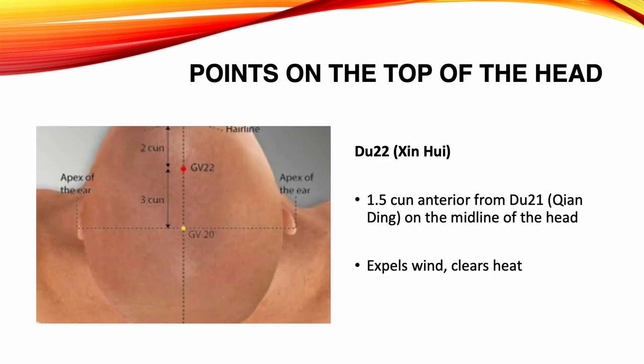Du 22, Xin. Location: 1.5 Sun anterior from Du 21, on the midline of the head. Functions: expels wind, clears heat. Indications: headache, dizziness, nasal congestion, anosmia, convulsions in children.